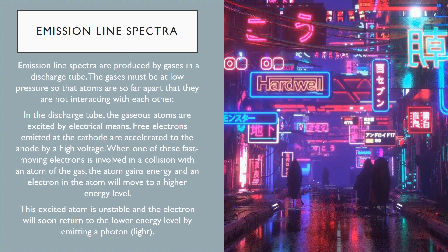So when at a high energy level, it's unstable. And when this atom de-excites back to the ground state, it has to give off energy. And this energy is in the form of light — a photon. So this is how a discharge tube works.